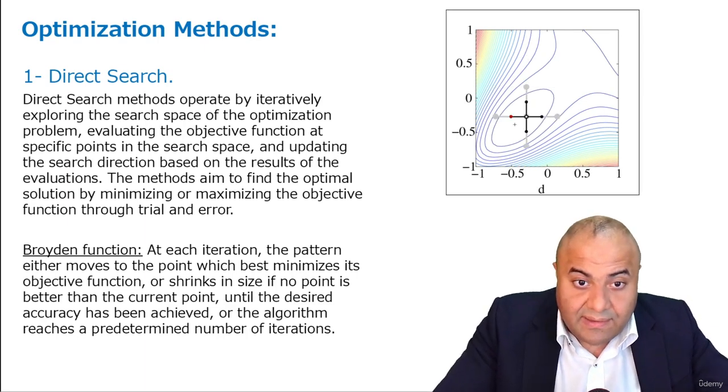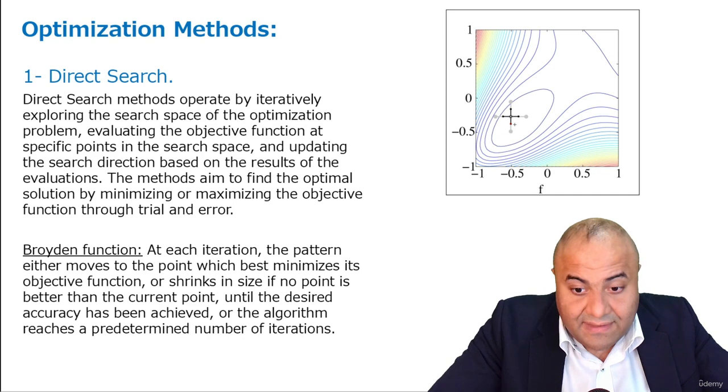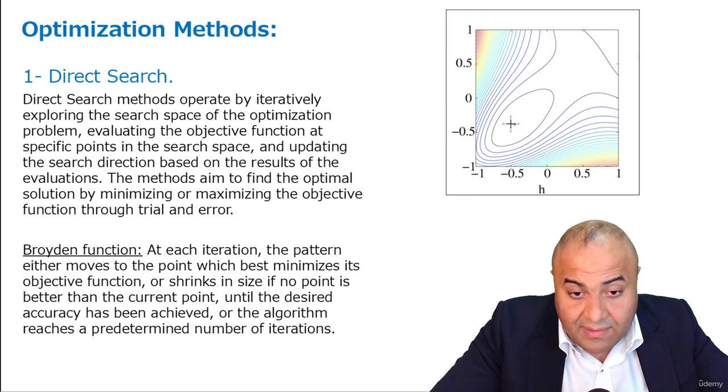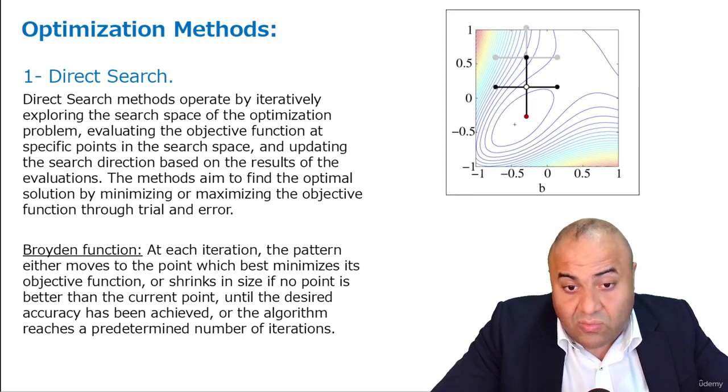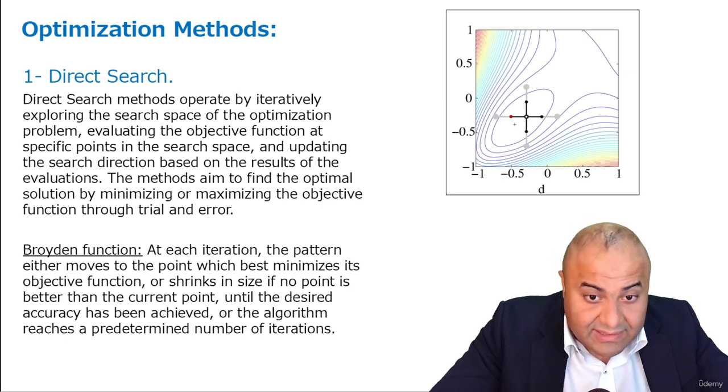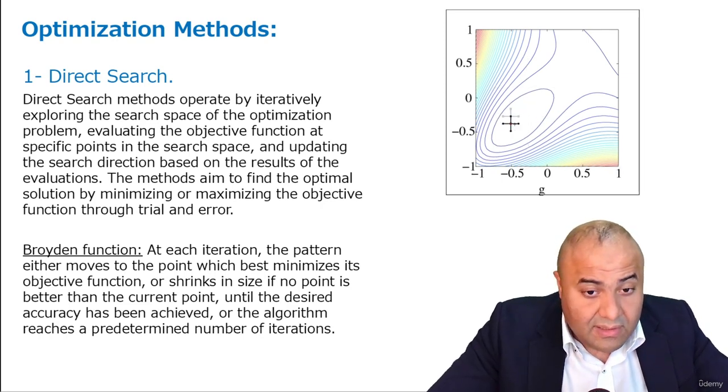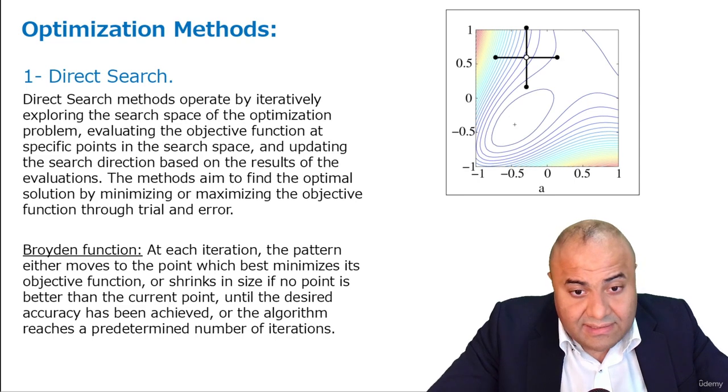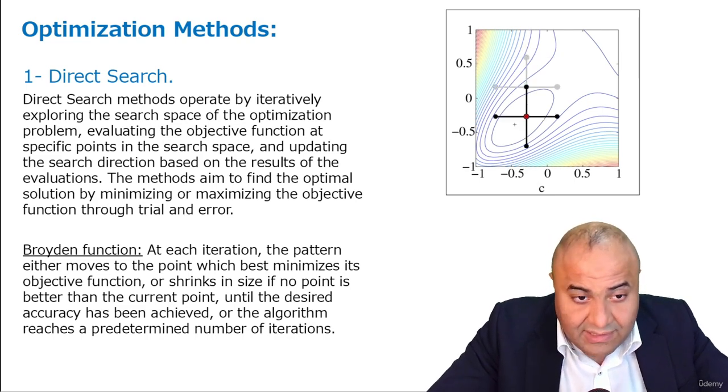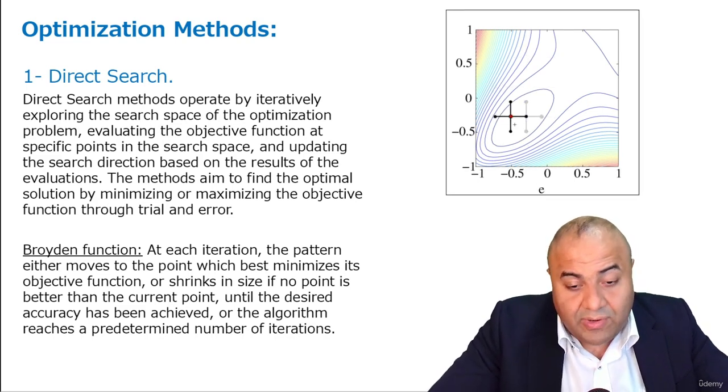And of course, if these values have the same, comparable values, we shrink it again, and so on, as you can see in the above graph. Now, as you can see here, this is very much a procedure. It doesn't have a randomized component in it.